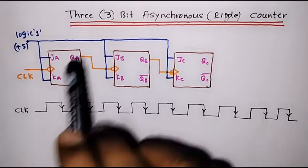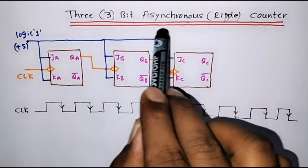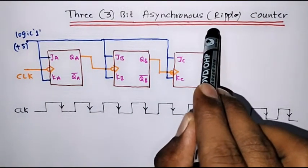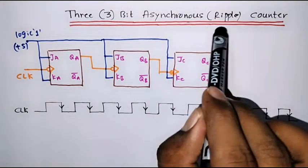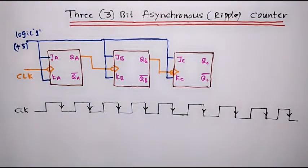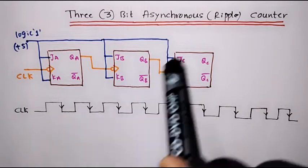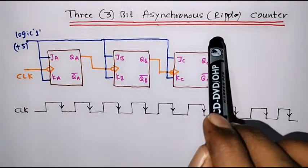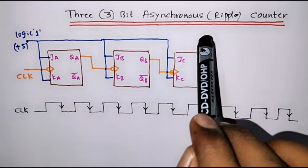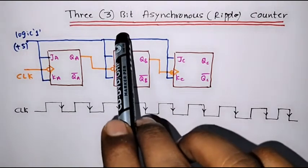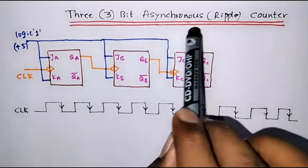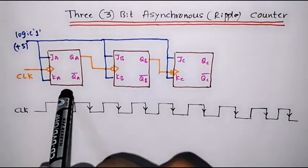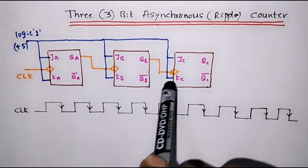In this lecture, we will study the 3-bit asynchronous counter. Asynchronous counter is also known as ripple counter. We know that for an n-bit counter, we need n number of flip-flops. So here we are implementing a 3-bit counter, and I have used 3 flip-flops.